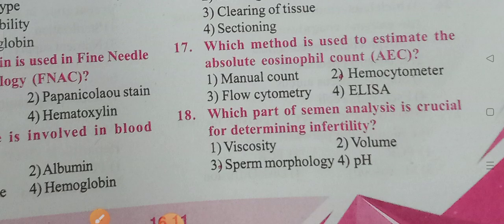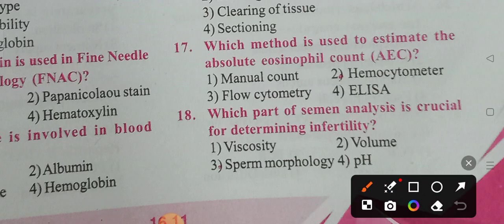Question seventeen: Which method is used to estimate the absolute eosinophil count? Options: manual count, hemocytometer, flow cytometer, ELISA. Option 2 is the correct answer — the hemocytometer method is used to estimate the absolute eosinophil count.